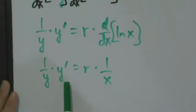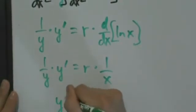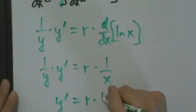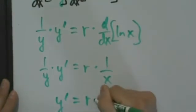So now we want to get y prime by itself, so we multiply both sides by y. So y prime equals r times 1 over x times y.